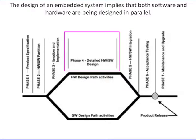Phase 4 is independent hardware and software design tasks. The rule of thumb is to decide if 70 percent of the software can be reused — if so, do not change the processor. Most companies will not change the processor unless there is something seriously deficient with the current architecture. Hardware design begins once the architecture is set and the processor has been selected.